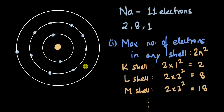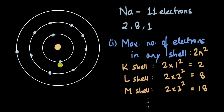Now this setup makes sense: the first shell can hold a maximum of two electrons, the second shell a maximum of eight, and the outermost shell has one because there is only one electron remaining. Now let's take a different example — let's look at a calcium atom.